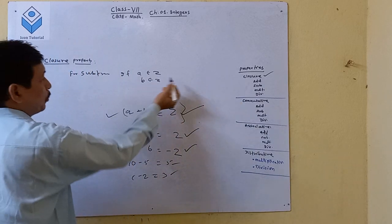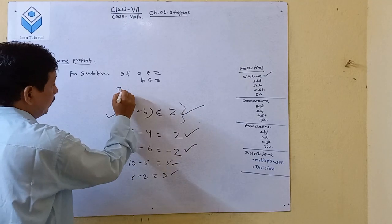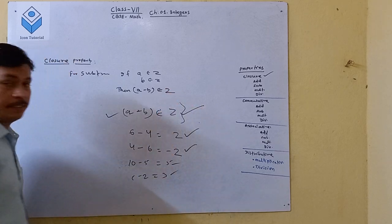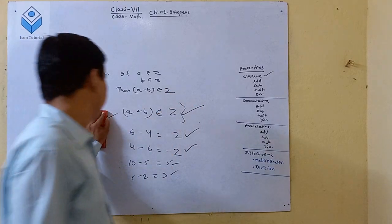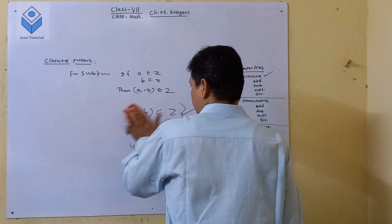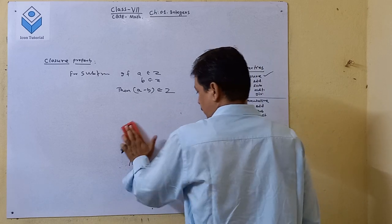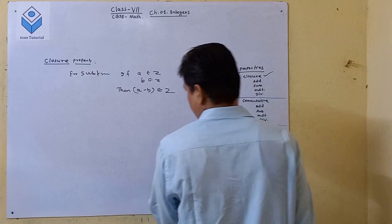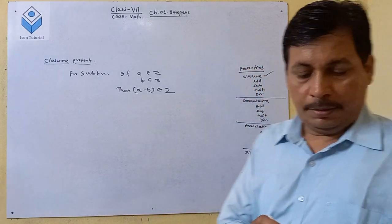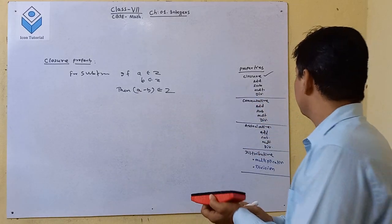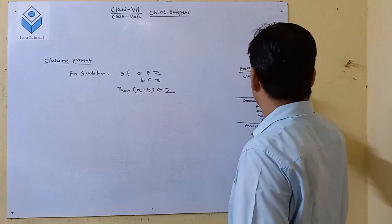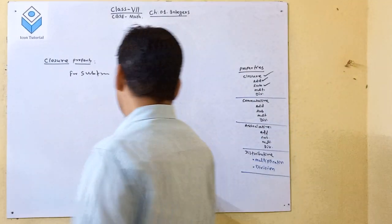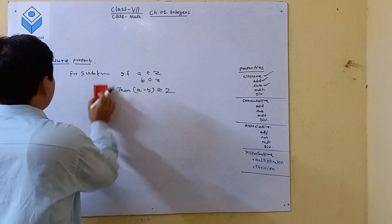So if A belongs to Z and B belongs to Z, then A minus B belongs to Z. If A minus B is an integer, then B is an integer.